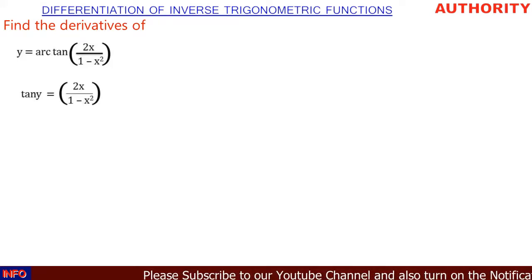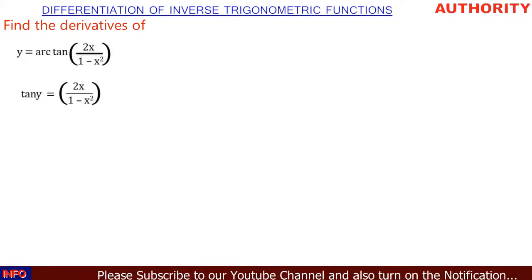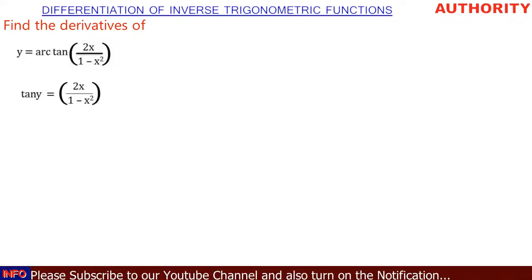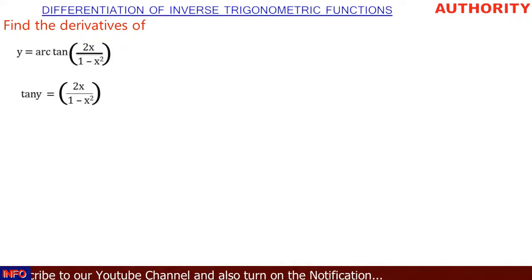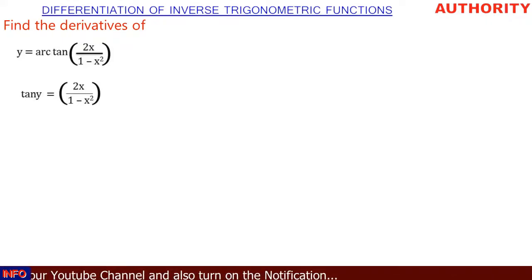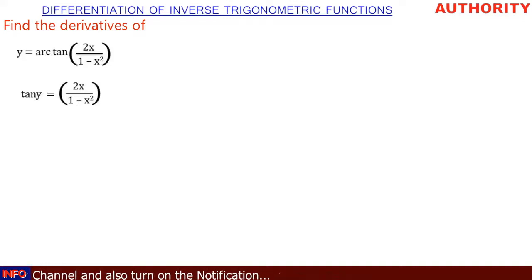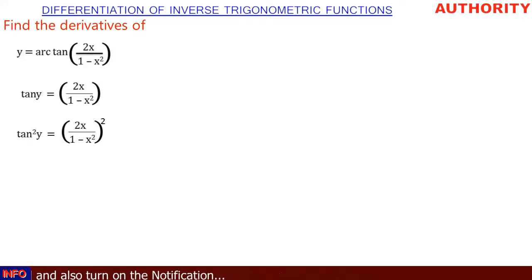We're going to say that tan y is equal to 2x all over 1 minus x squared. Now, if we take the square of both sides, the square of both sides is going to give us tan squared y.